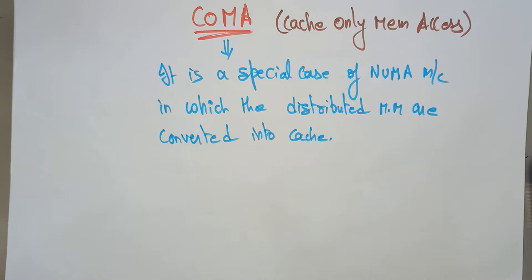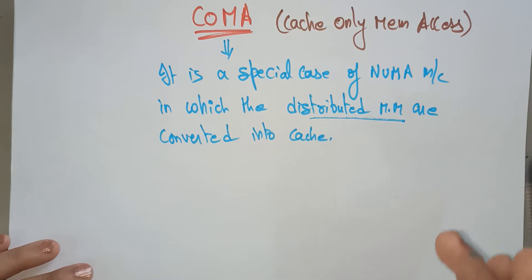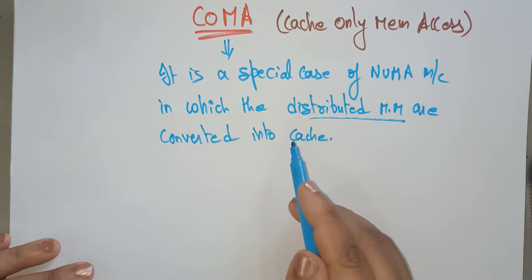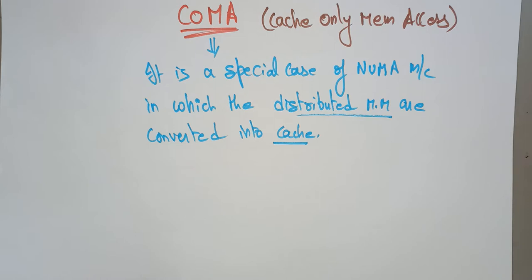Whereas in COMA, data has no specific permanent location because the distributed main memory — the RAM distributed to all processing elements as local memories — is converted into cache. Cache is a temporary but very fast storage device. Compared to local memory and main memory, cache is the fastest storage device.